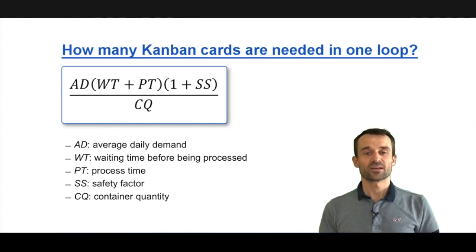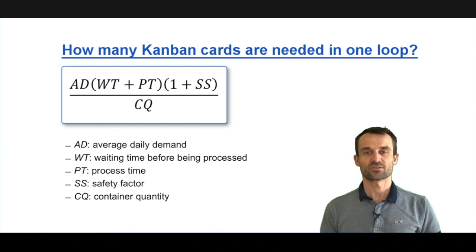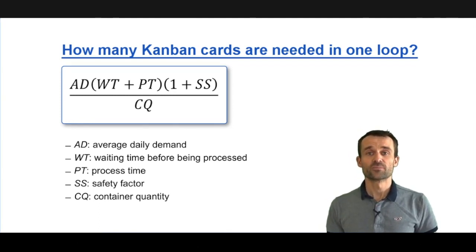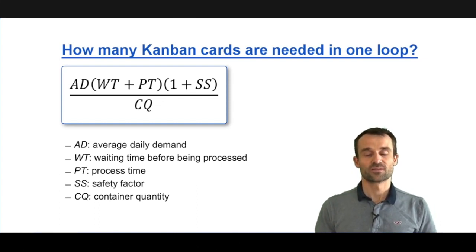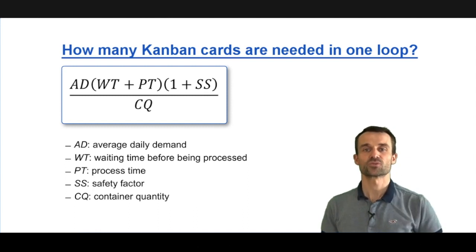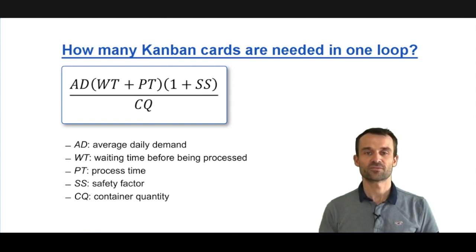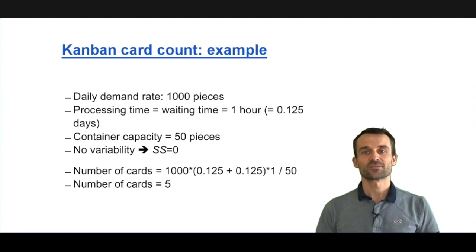We multiply that with waiting time plus processing time, giving us the flow time. Then to account for variability, we inflate that number and multiply it with one plus a safety factor SS. If you have no variability, that safety factor can be zero. If you have a lot of variability, that safety factor can be one or even more.